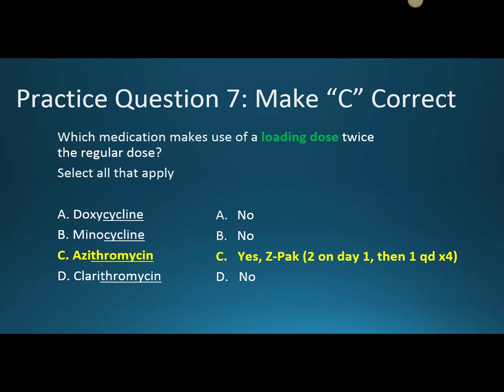Now let's make C correct: which medication uses a loading dose — twice the regular dose? That's azithromycin in the Z-Pak. You take two tablets on the first day, then one tablet every day thereafter. For children's liquid formulations, it might be two teaspoonfuls on day one and one teaspoon each day after — again, a double dose on day one as the loading dose.